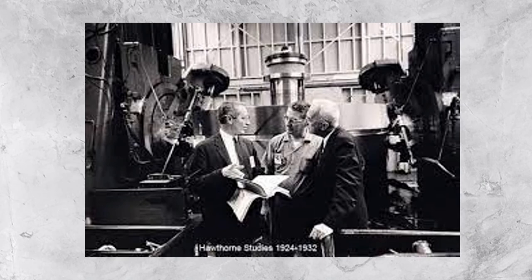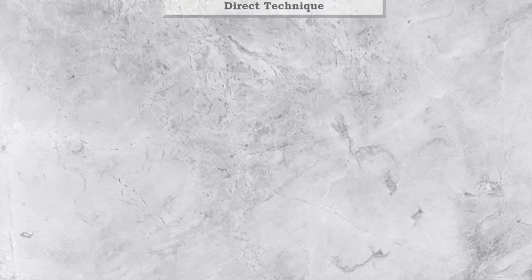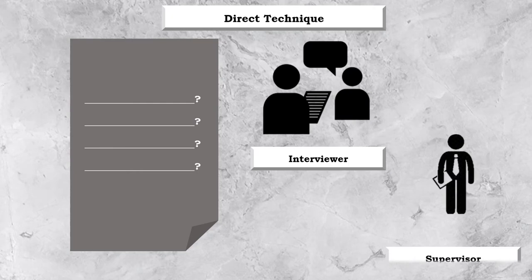Mass Interviewing Program. During the course of experiments, about 20,000 interviews were conducted between 1928 and 1930 to determine employees' attitudes towards company, supervision, insurance plans, promotion and wages. Initially, a direct approach was used whereby both the interviewer and the manager or supervisor was present and questions were asked which were considered important by managers and researchers.